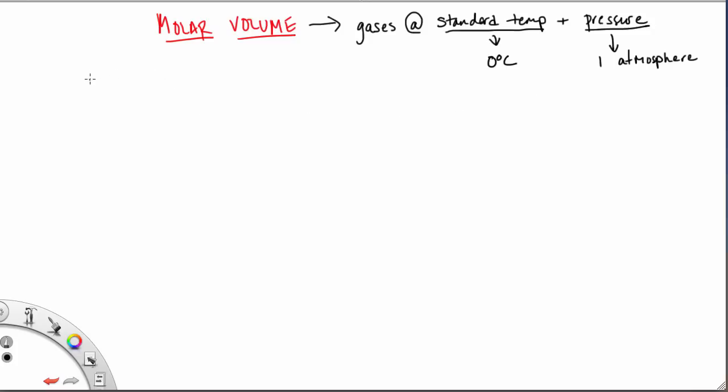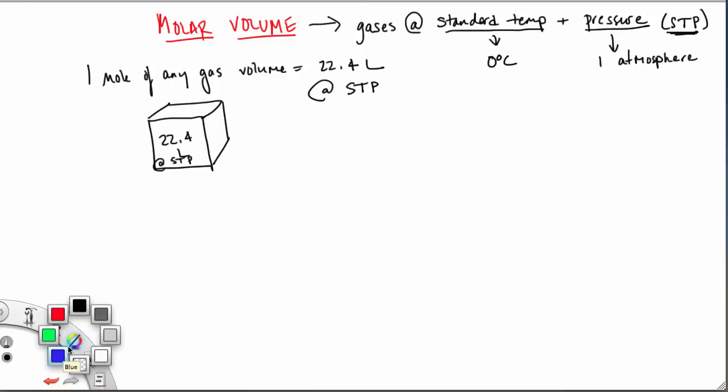Any gas, one mole of any gas, has a volume equal to 22.4 liters at STP, which is standard temperature and pressure. If we consider this box to have a volume of 22.4 liters at STP, how many representative particles are going to be in this box of gas?